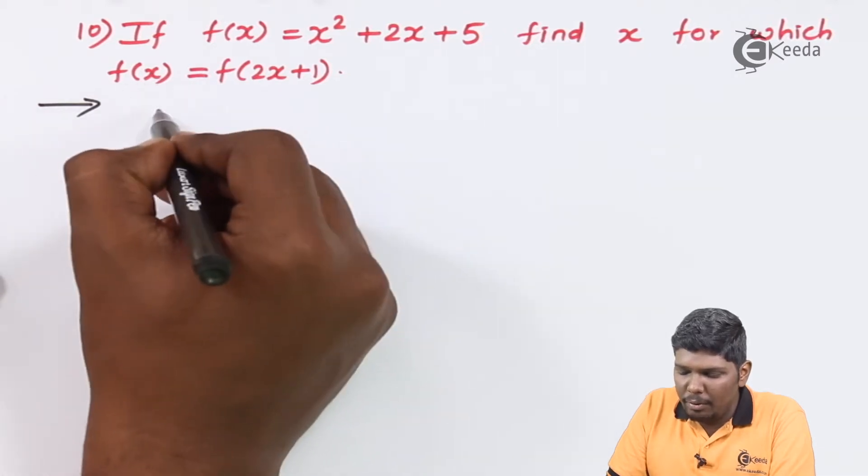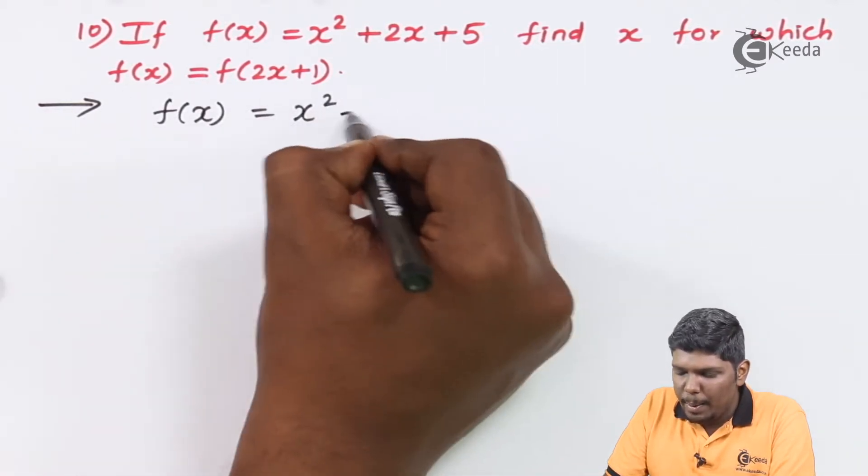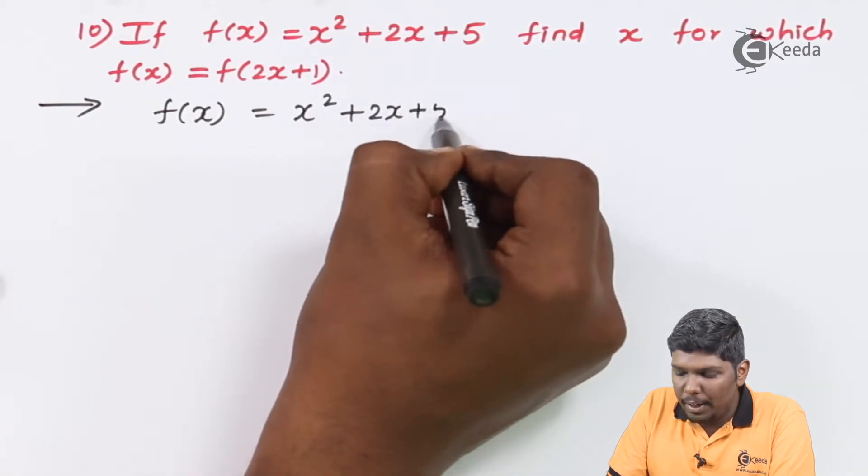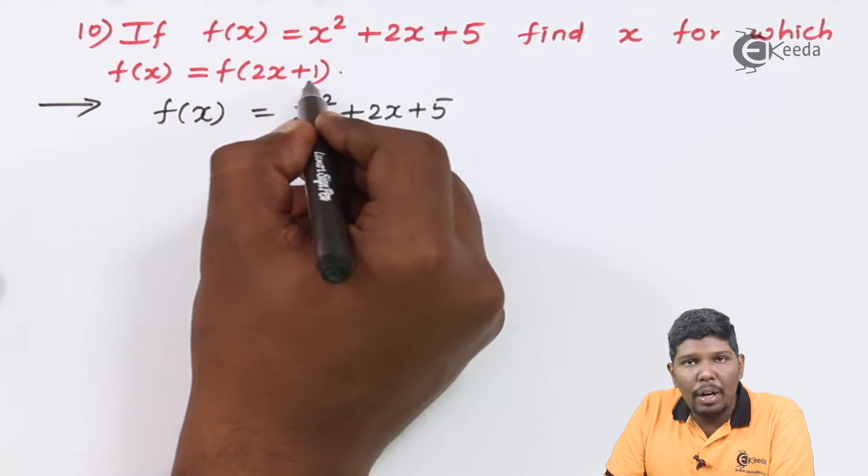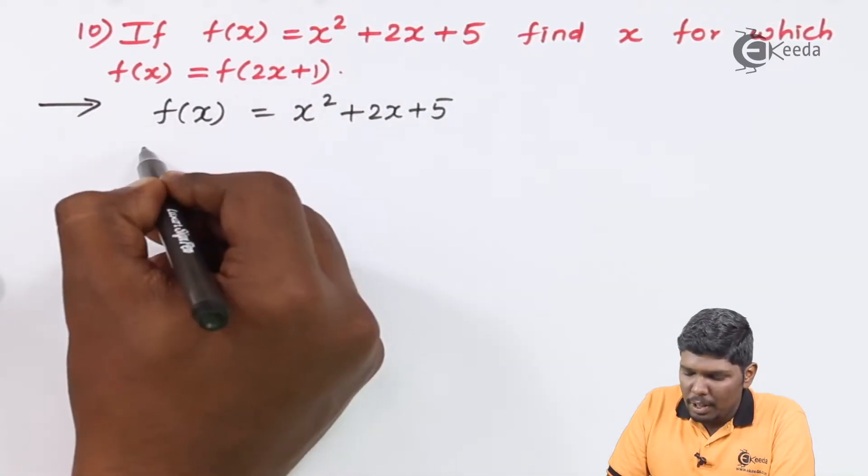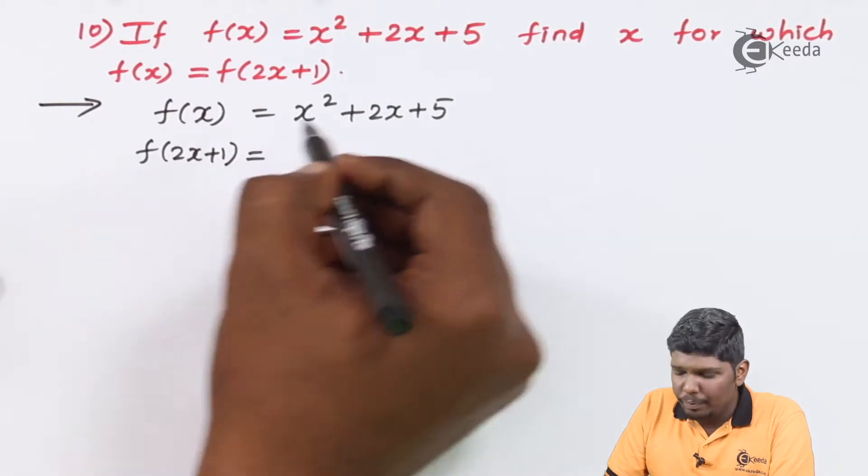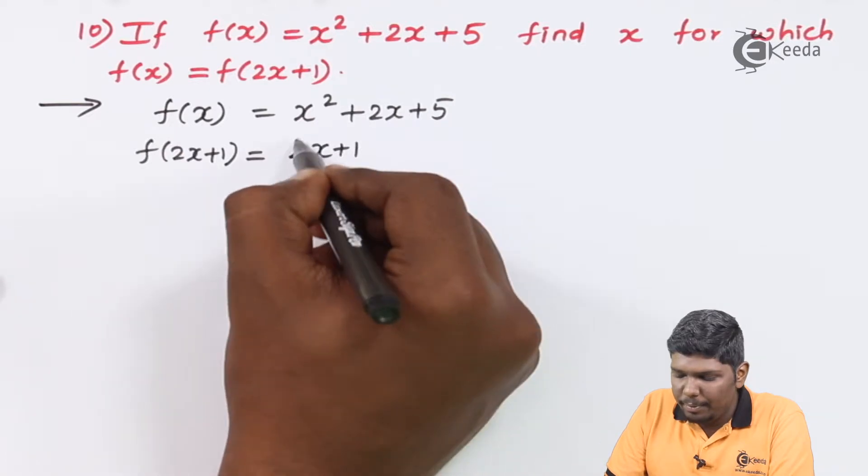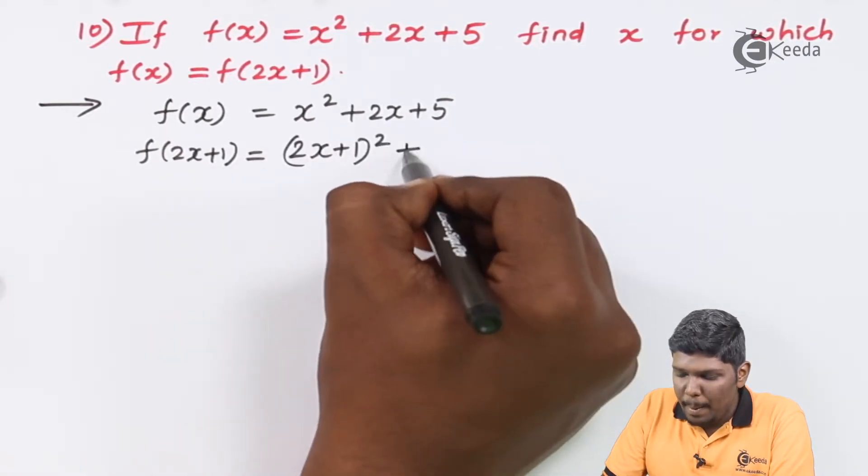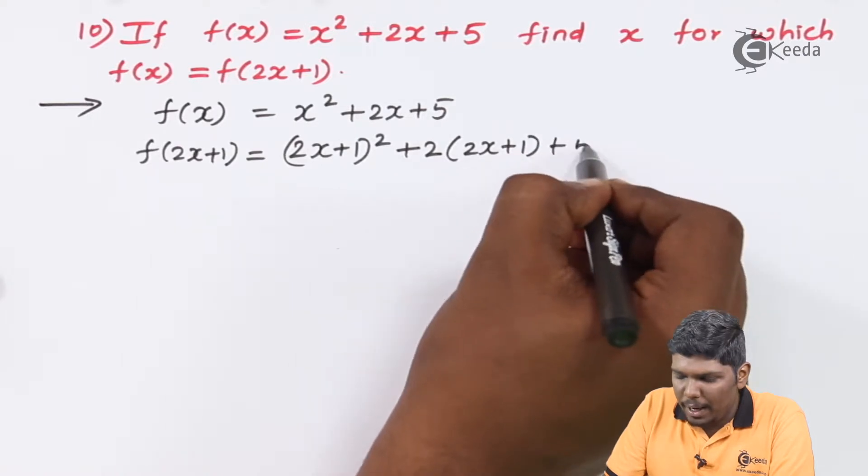So let us write the given equation: f(x) = x² + 2x + 5. Also at the same time we will find the value of f(2x+1). So f(2x+1) is equal to x will be replaced by 2x+1. So this becomes (2x+1)² + 2(2x+1) + 5.